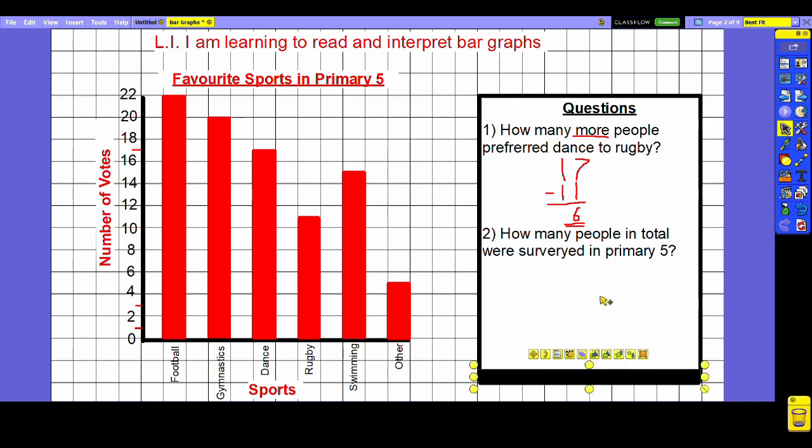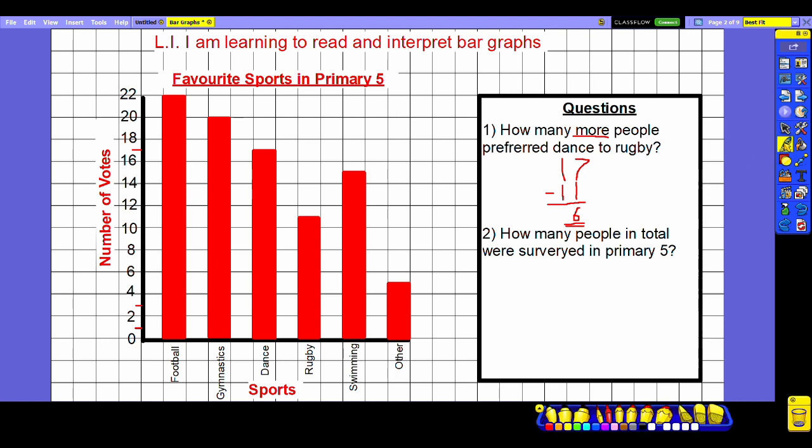This next question is a little bit trickier still. It's asking us how many people in total were surveyed in primary five. To work this out we need to look at all the categories. We're looking for the grand total of people that were surveyed and to do that we're going to need to add all of the categories together.